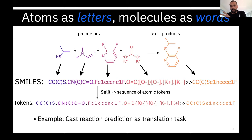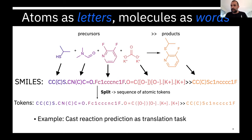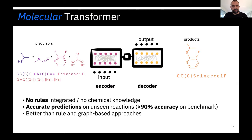With this parallelism, we can cast reaction prediction — where reactants and reagents are digested by an architecture to predict a product — as a translation task. This opens up a large number of neural machine translation architectures for the forward reaction prediction problem. This is exactly what we have been doing, and to date this remains the most successful approach in terms of prediction accuracy, reaching more than 90% on standardized datasets.